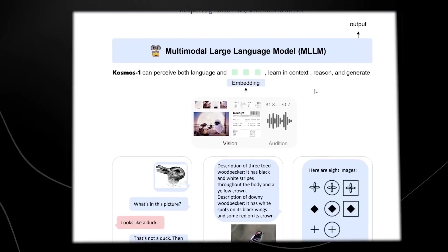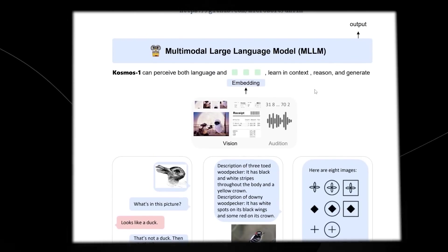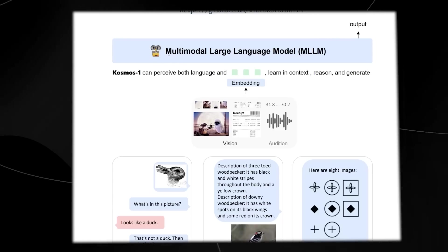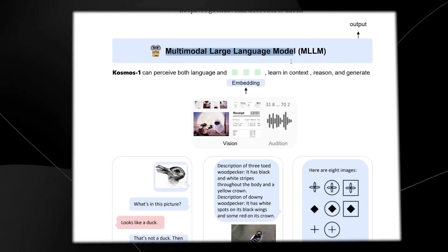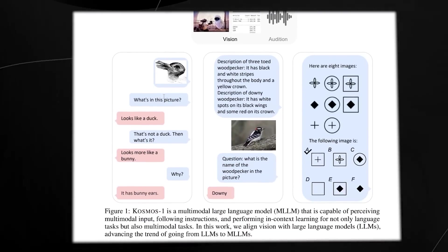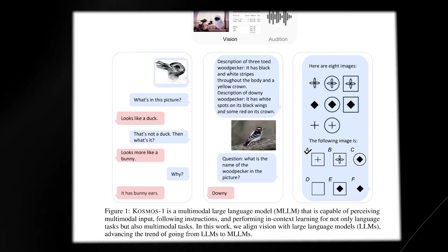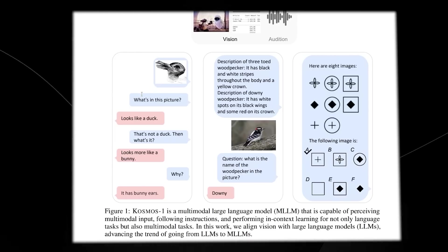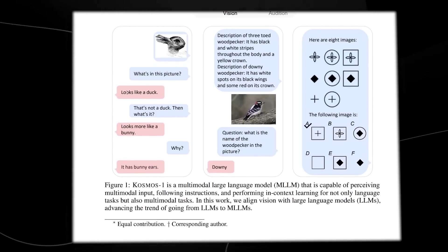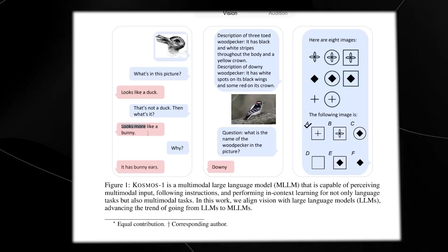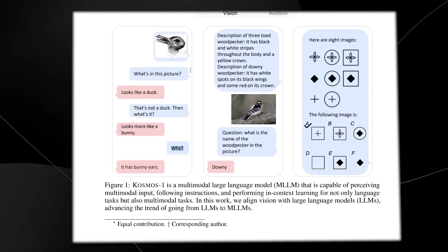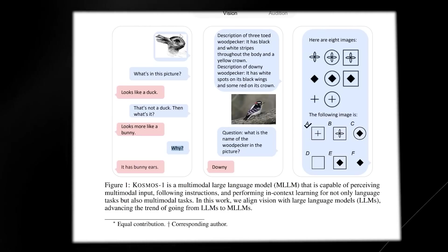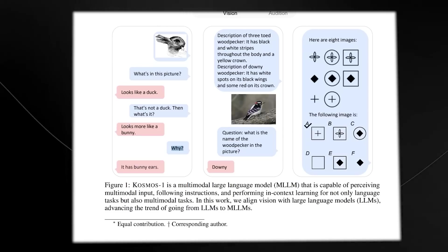Here you can see we get a first look at a paper which breaks down exactly what GPT-4 is allegedly going to be like. This is Cosmos 1, basically explaining a multimodal large language model. So we can see here that there are several descriptions and examples of inputs and outputs that show us exactly what GPT-4 is going to look like. It says what's in this picture looks like a duck. That's not a duck. Then what is it? It looks more like a bunny. Why? Because it has bunny ears. And you can see that this picture is actually even confusing to a lot of humans.